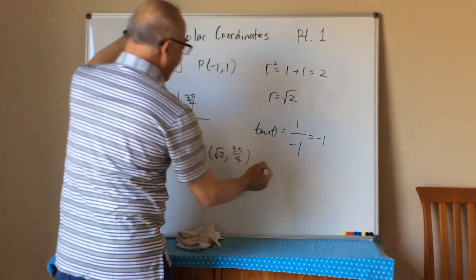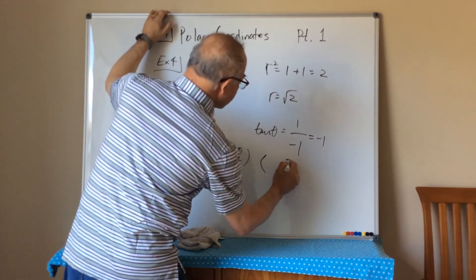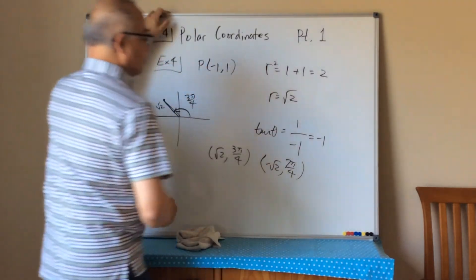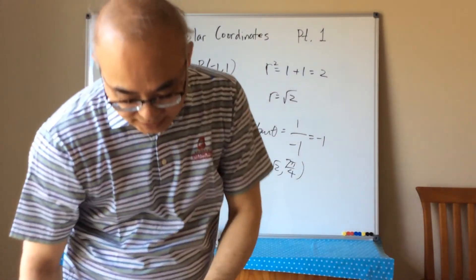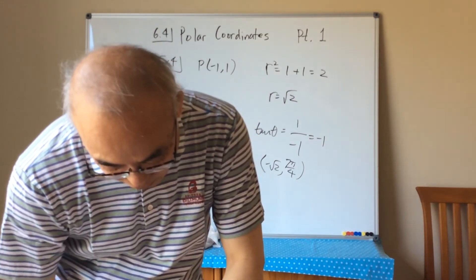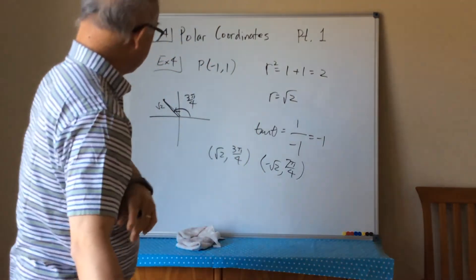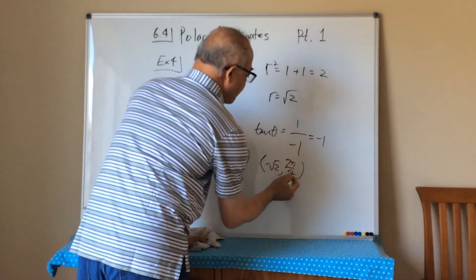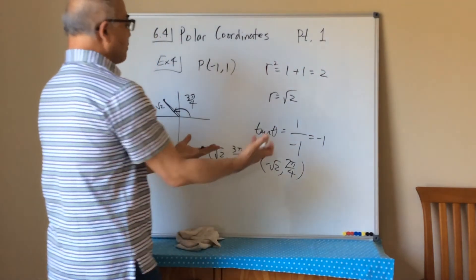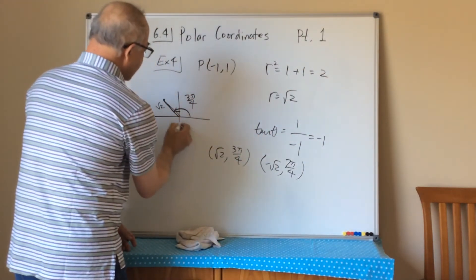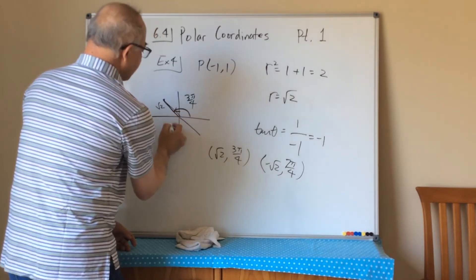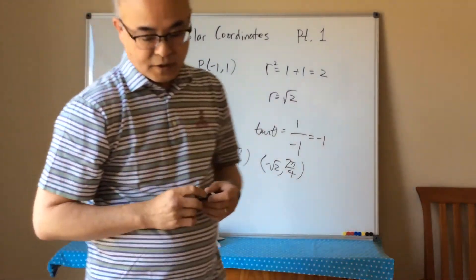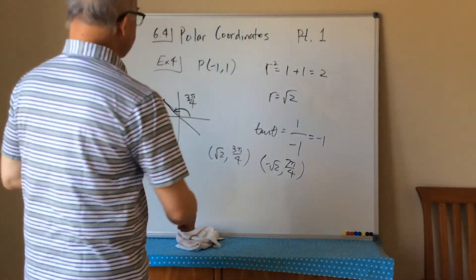We can also add pi to the angle: 3pi/4 + pi = 7pi/4, and go in the negative direction, giving (-√2, 7pi/4). The book uses negative pi/4 instead of 7pi/4, which is the same thing. So (√2, 3pi/4) and (-√2, 7pi/4) — equivalently (-√2, -pi/4) — are the same point.